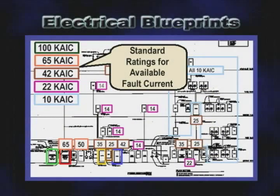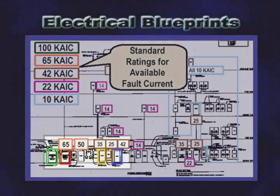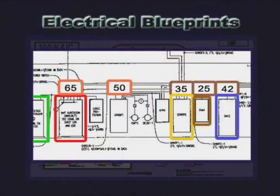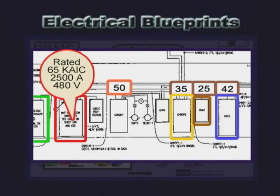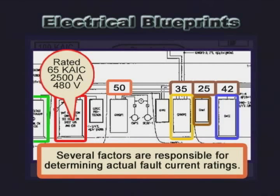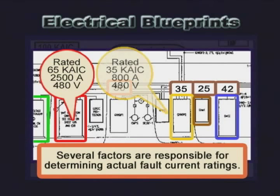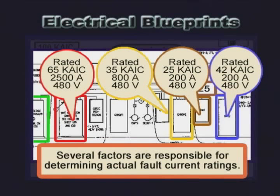When an engineer designs an electrical system, he calculates the fault current at each panel or disconnect, to ensure that the components used are rated above the calculated values. Usually, there are several standard levels or categories of short circuit ratings present in most buildings. Let's take a closer look at the drawing and some of the interrupting capacity ratings of the panels and switchgear. On the left side of this drawing, we see the main service, which is rated for 65,000 amps of fault current. There are several factors that determine the actual fault currents and withstand ratings, and so two seemingly similar panels can have completely different ratings.